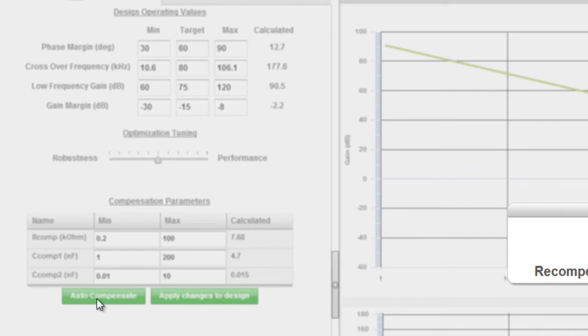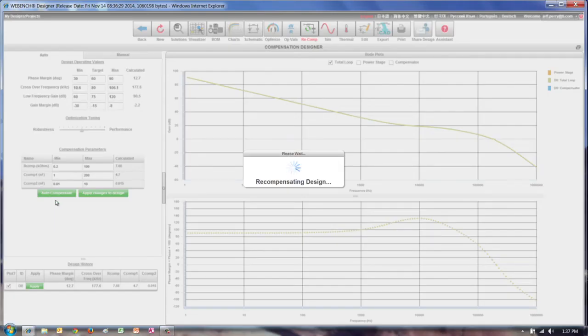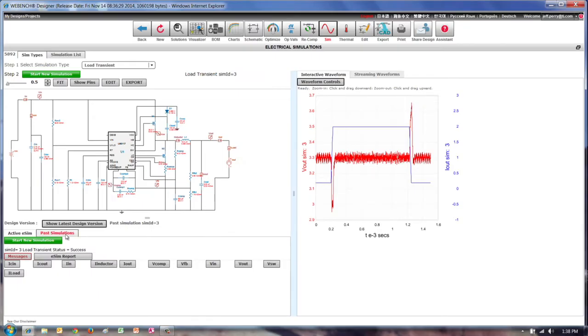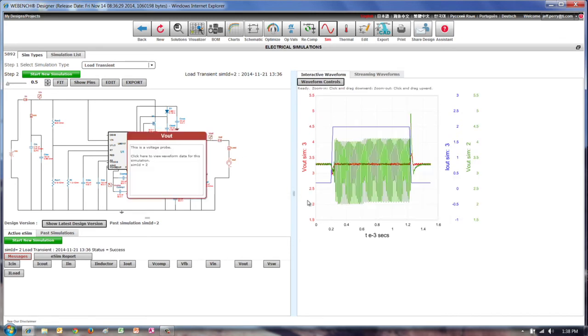And the tool provides values which yield margins inside the limits you establish. Now we can see that the phase margin is very close to our target, and the load transient simulation now meets our stability criteria.